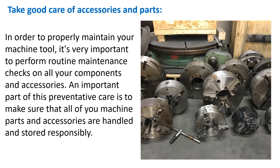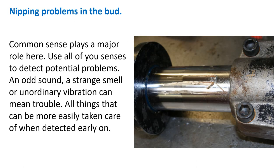It's not just the tools that require correct maintenance, handling and storage — the accessories are just as important. Damage, misuse, and rust can contribute to the degradation of valuable machine tool accessories. Clean, inspect, oil and store accessories appropriately. Detecting faulty accessories early enables you to isolate and replace them efficiently. Fifth, nipping problems in the bud: common sense plays a big role. Strange noises, strange smells, and excessive load on the amp meter can all be clues to faulty equipment and impending disaster.